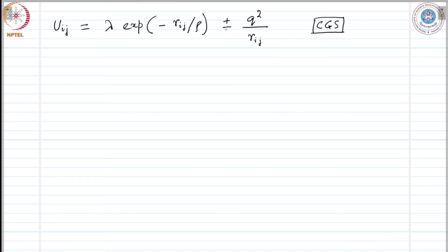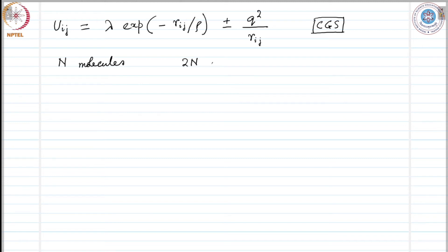We can arrange the sum to converge rapidly so that its value will not depend on the site of the reference ion in the crystal, as long as it is not near the boundary. Considering this bulk system, we will ignore the surface. Now if we have N molecules — in the case of sodium chloride, one formula unit is called a molecule — that means we have 2N ions.